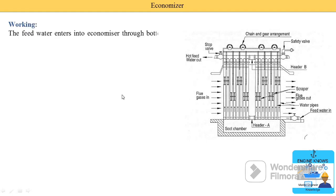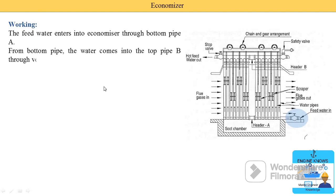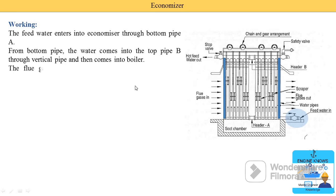The feed water enters into the economizer through the bottom pipe A — the feed water inlet pipe. The water then comes into the top pipe B through the vertical pipes, and then goes into the boiler. Water enters at the bottom, moves up through the vertical pipes, and comes into the horizontal pipe B, after which it is supplied to the boiler.